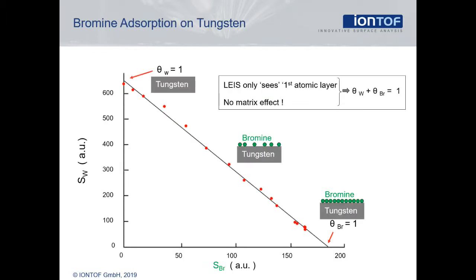The linearity of the signal with surface concentration can also be demonstrated experimentally. The plot shows the intensity of a tungsten peak versus the intensity of a bromine peak. We start in the upper left with a clean tungsten surface, and while adsorbing more and more bromine, the intensity of the tungsten drops until almost a complete bromine layer is formed, covering about 90% of the tungsten. Some holes in the film remain, but using other techniques that do not have the extreme surface sensitivity of LEIS, you will always detect significant amounts of tungsten which is only one monolayer below the surface. As the correlation plot can be fit with a straight line, any part of the surface is either tungsten or bromine, and this is reflected in the LEIS signals of the two elements which are perfectly anticorrelated.